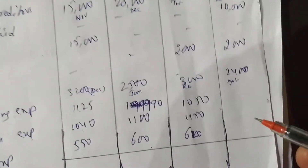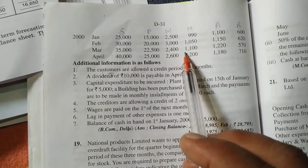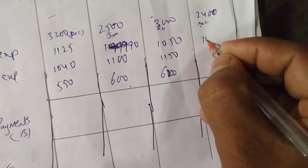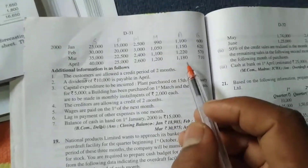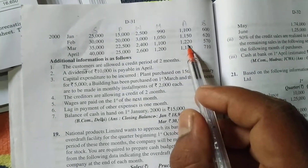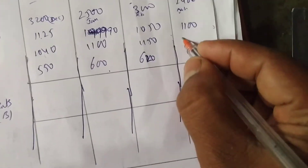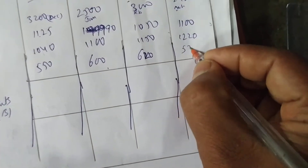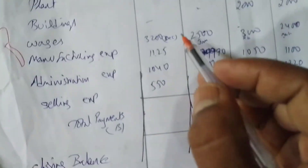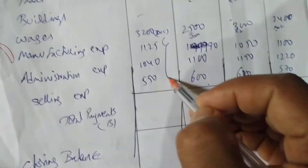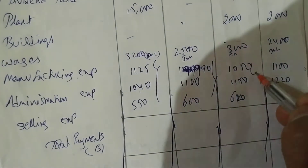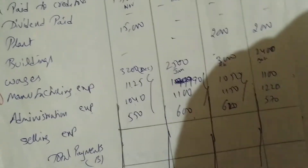In April we write March's expenses: manufacturing 1,100, administration 1,220, selling 570. So December's expenses go in January, January's in February, February's in March, March's in April — because the lag in payment of other expenses is one month.